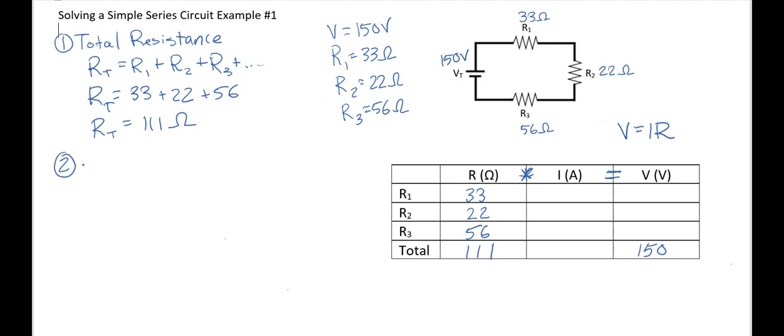I'm going to put that over here. We're going to find the total current. So we're going to use V equals IR. And we're going to have 150 equals I times 111. And so if we divide both sides by 111, we're going to get that our current is going to be equal to 1.3514.